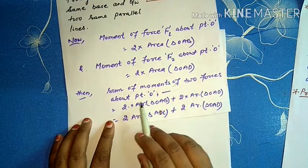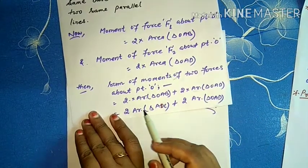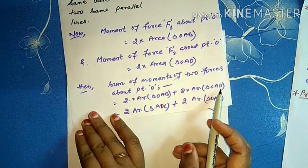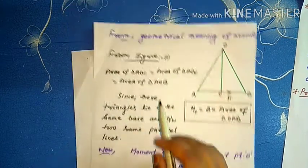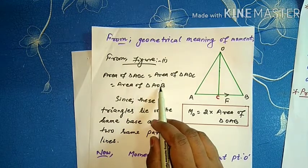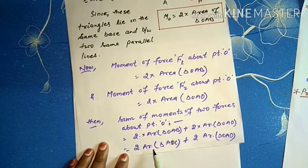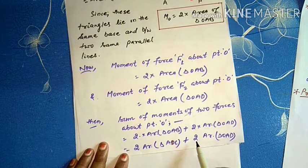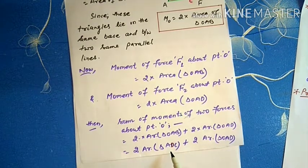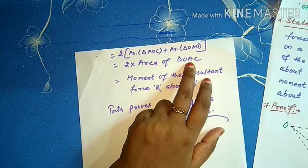Now, the sum of moments of the two forces about point O equals 2×area(OAB) plus 2×area(OAD). From the above equations, we know that area of triangle OAB equals area of triangle ADC. So substituting, we get 2×area(ADC) plus 2×area(OAD). The sum of area(ADC) and area(OAD) equals the area of triangle OAC, covering the full region.